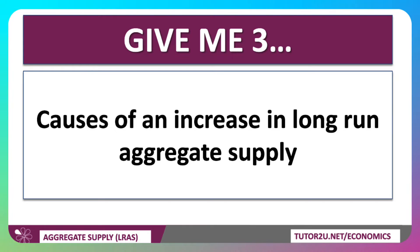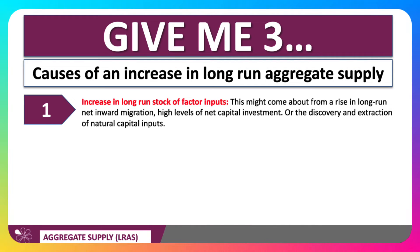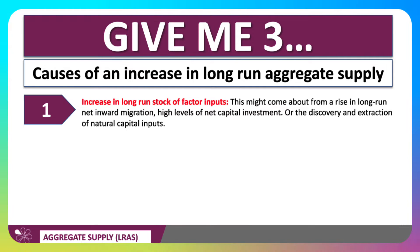So, give me three causes of an increase in long-run supply. Well, there are many, but we're only going to focus on three. One would be an increase in the long-run stock and supply availability of factor inputs. Factor inputs are otherwise known as the factors of production — the inputs we use to produce goods and services.